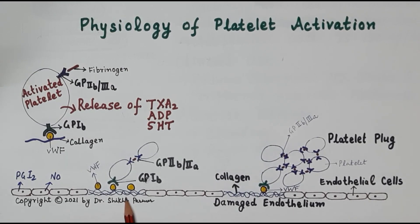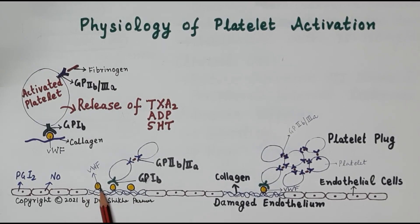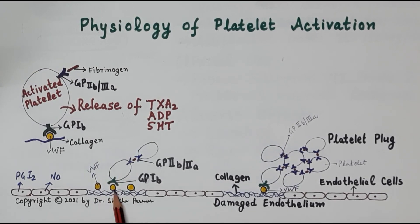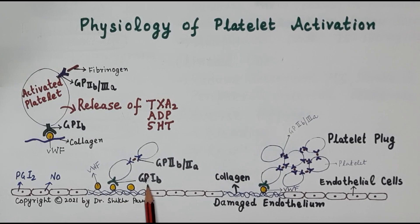Apart from this, due to damage to the endothelium, the sub-endothelial collagen is exposed — these are the blue colored fibers shown in the diagram. The damaged endothelial cells release von Willebrand factor, which binds to the collagen. The activated platelets then bind to the von Willebrand factor through GP1b receptors, which are located on the surface of the platelets.